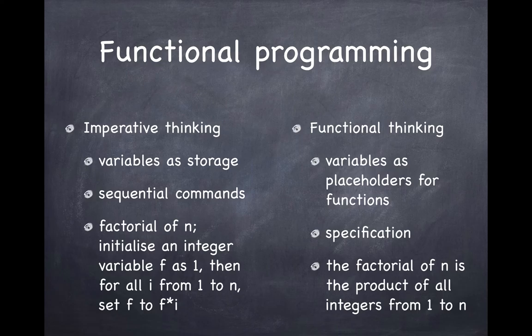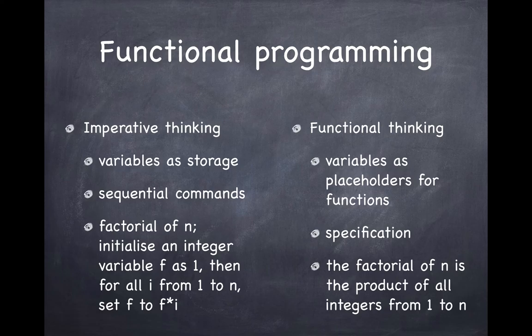So what is functional programming? If you think about Fortran-like or imperative thinking, you always have memory and storage where you store values. You have named pointers to chunks of memory called variables, and you specify your algorithm in commands executed sequentially. For a factorial program, you have two memory locations — one called f and one called i — you initialize f with one, then have a loop from one to n and reassign values to the variable f.